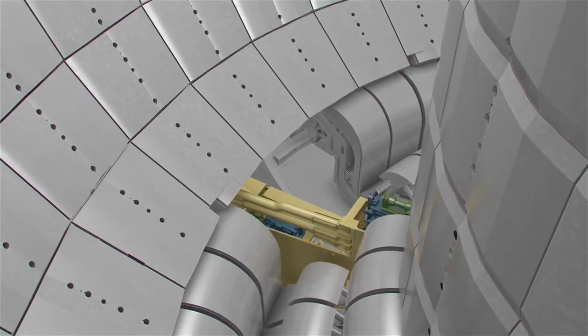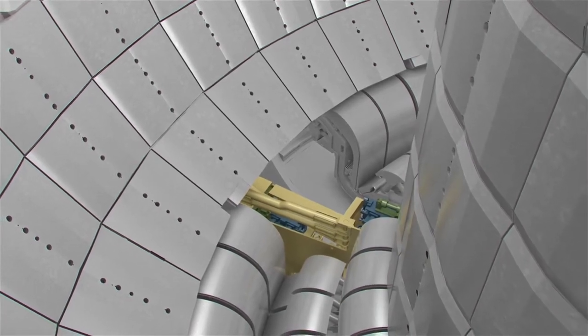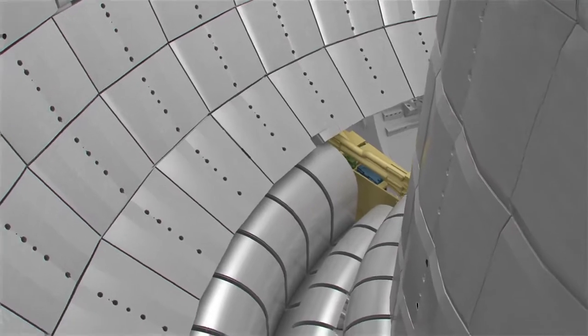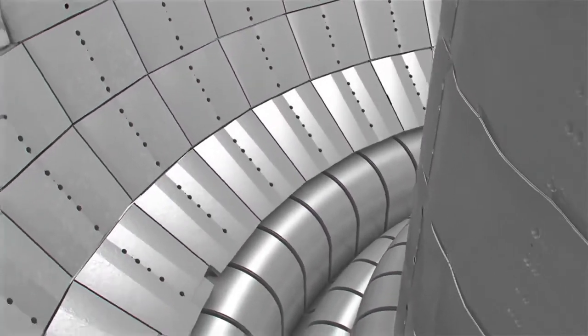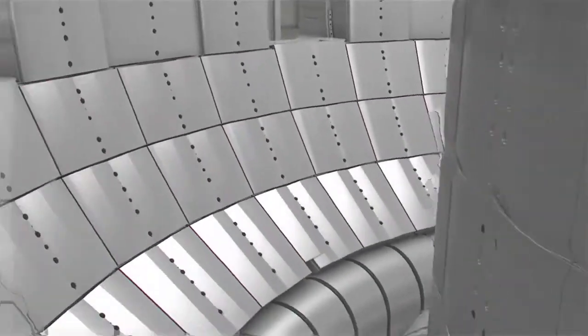The assembly crew, counting 35 people on average per shift, will work in two shifts during daytime. During the night shift, the welding performed during the day will be examined, and installed components will be checked for their leak tightness. This operation will last about two years.